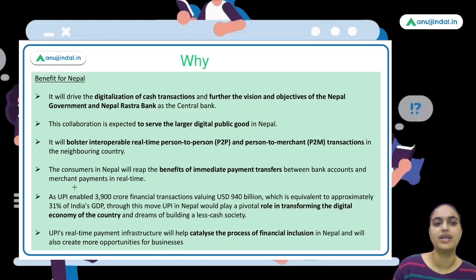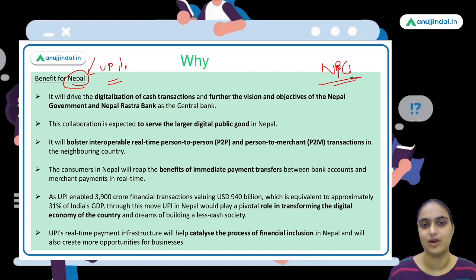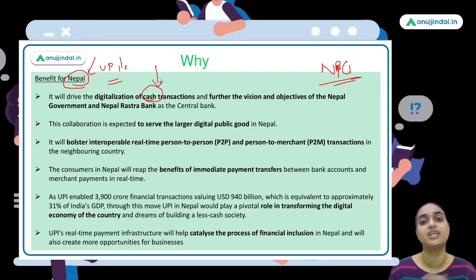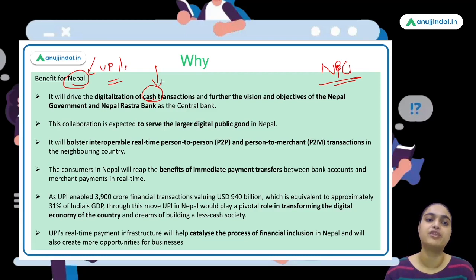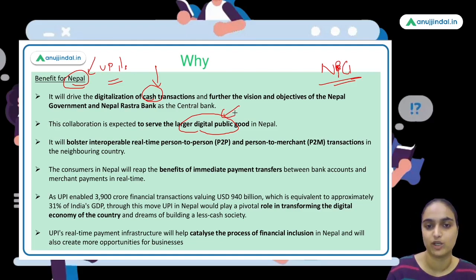Nepal's government and central bank have a vision to create a digital economy. Implementing UPI will help digitize cash transactions in Nepal, serving the larger digital public good. People will be able to conveniently do transactions with one click — anytime, anywhere — which will greatly benefit the public.